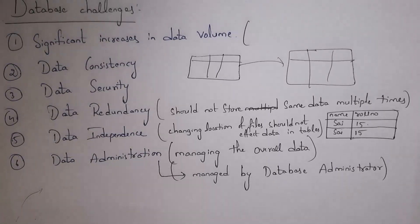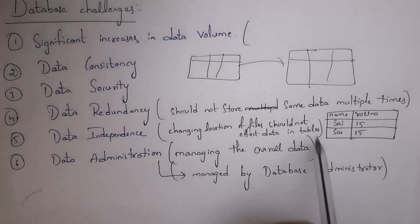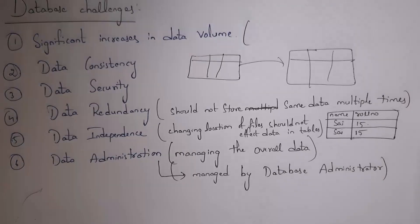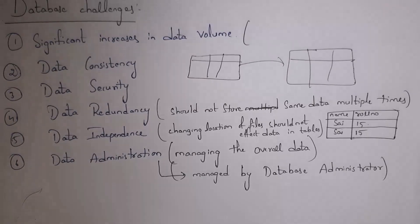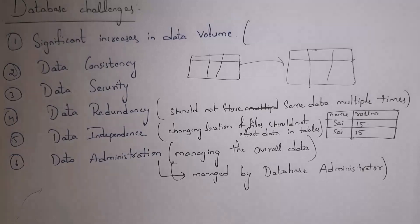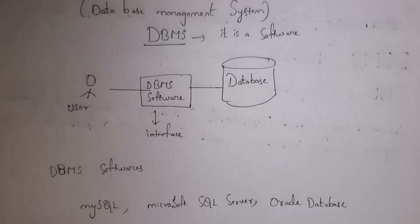The fourth challenge is data redundancy — we should not store the same data multiple times. For example, if a table has name 'Sai' and roll number 15 entered twice, the database must store the data only once. The fifth is data independency — if we move a database from one location to another, it should not affect the data in the database table. The sixth challenge is data administration — managing overall data, handled by a database administrator.